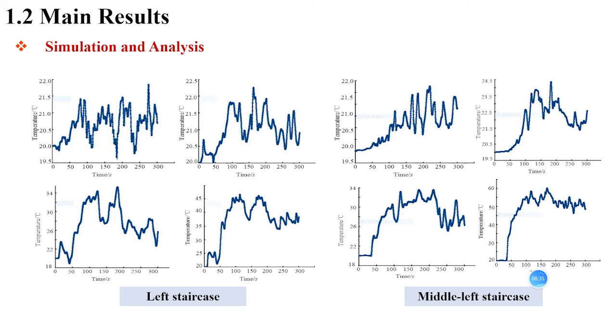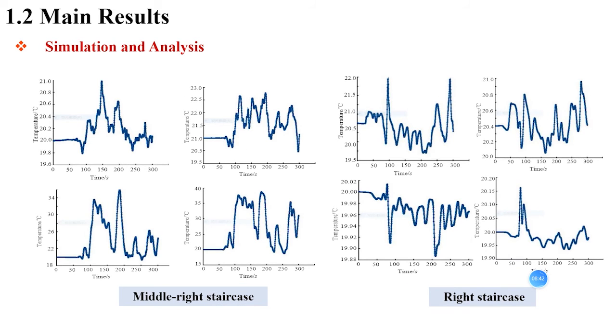Meanwhile, as the increase of time, the temperature will grow slowly. Similarly, the temperature change at the middle left staircase is investigated and given above, still taking the four positions: around the ground, 1 meter over the ground, 2 meters over the ground, and 3 meters over the ground. In the following, simulations of the last two cases concerning the temperature changes around the middle right staircase and the right staircase are given briefly.